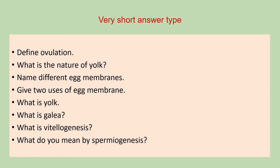The first question in this category is: define ovulation. The second is: what is the nature of yolk? Next is: name different egg membranes. Next is: give two uses of egg membrane. Next is: what is yolk? Next is: what is gilia? Next is: what is vitellogenesis?